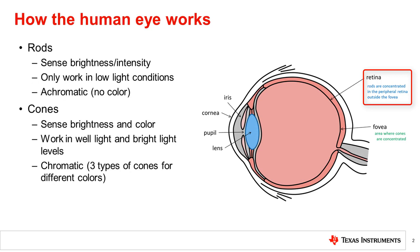They are used for sensing brightness specifically in lower light conditions. They are achromatic and cannot distinguish between colors. On the other hand, cones are concentrated at the fovea and are responsible for seeing detail in well-lit lighting conditions.